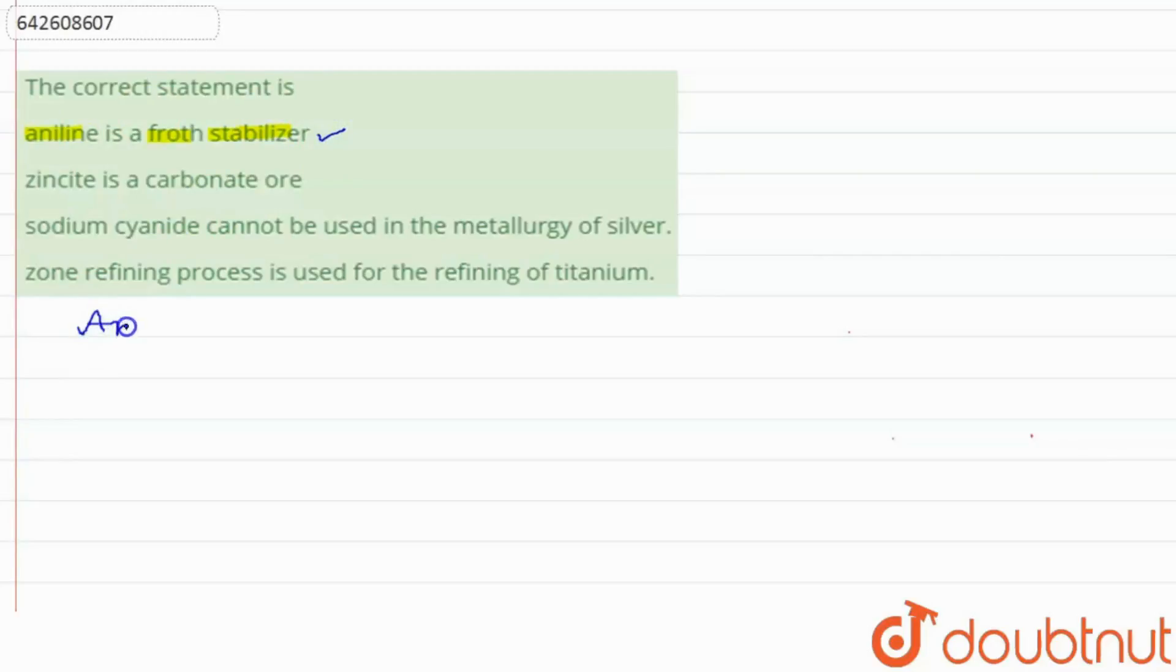Why? Because aniline is used as a froth stabilizer in froth flotation process. In which process? In froth flotation process. So froth flotation process is basically a process in which the minerals are separated from the mixture, right? So aniline in that process is used as a froth stabilizer. So this is our correct statement.